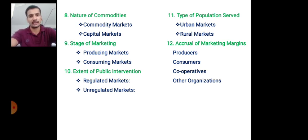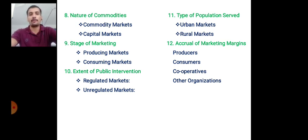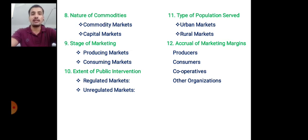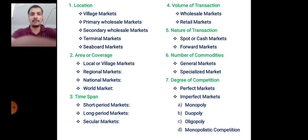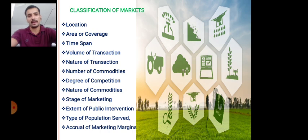The eleventh classification is based on type of population served, which may be urban market or rural market. The twelfth and last classification is based on accrual of market margins — every market exists for the purpose of benefits, whether for producers, consumers, cooperative societies, or other organizations. This covers all twelve dimensions of market classification.